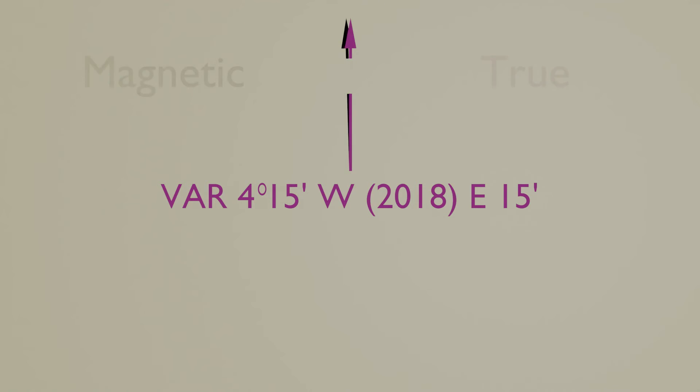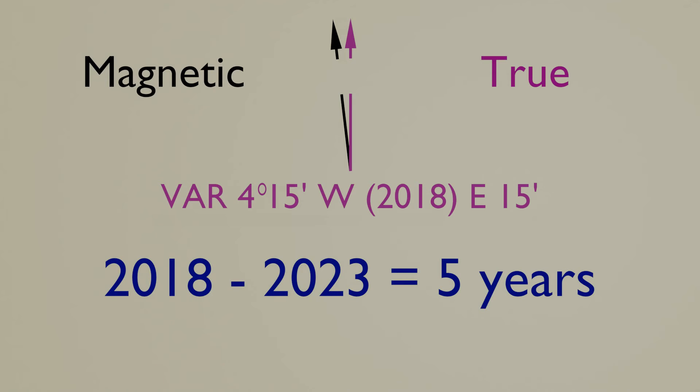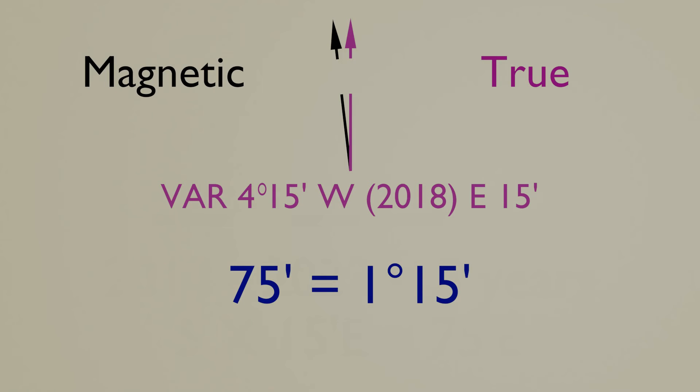When this particular chart was printed, the variation was 4 degrees, 15 minutes west for this particular area. Because the variation changes annually, it's important to know when the chart was printed, in this case 2018. The compass rose also tells us that the annual change is 15 minutes to the east. This means the variation will be getting less each year. If the year is now 2023, the chart would have been printed 5 years ago. So the total change would be 5 times 15 minutes, which totals 75 minutes. We have already learnt that there are only 60 minutes in a degree. So 75 minutes will work out to 1 degree and 15 minutes change east over the past 5 years. Our original variation was west and the change is to the east. So we will have to deduct 1 degree 15 minutes from the original 4 degrees 15 minutes, which gives us a current variation of 3 degrees west.